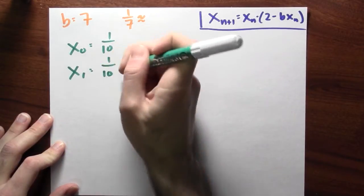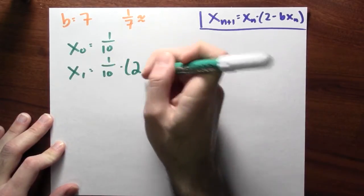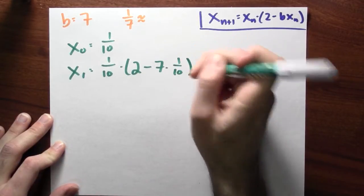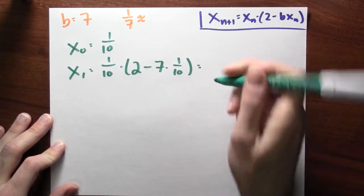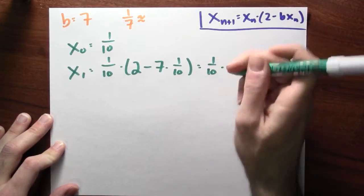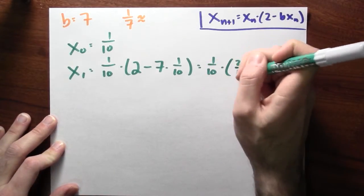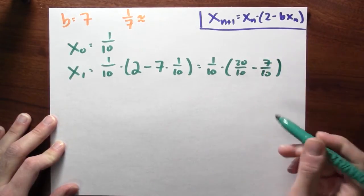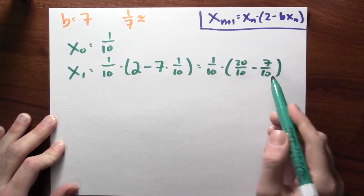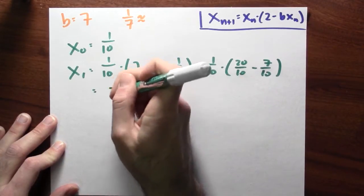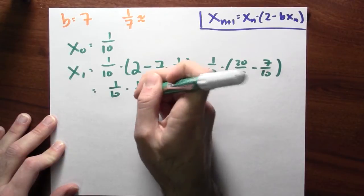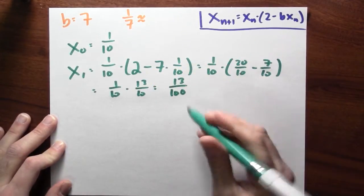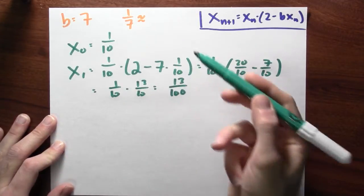So I take my original guess, 1/10. Multiply it by 2 minus b is 7 times my previous guess of 1/10. Now I can calculate this. This is 1/10 times, instead of 2, I'll write 20/10. And instead of 7 times 1/10, I'll write 7/10. I got 20 minus 7/10, so that's 13/10. So 1/10 times 13/10, that's 13 hundredths. And that's a slightly better guess as to the value of 1/7.